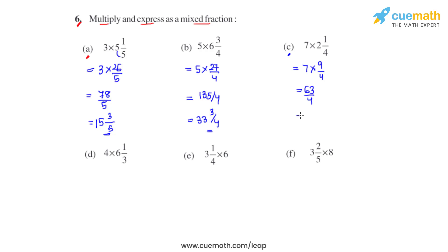Dividing 63 by 4 gives us the quotient as 15 and the remainder as 3, so we get 15 and 3 fourths.